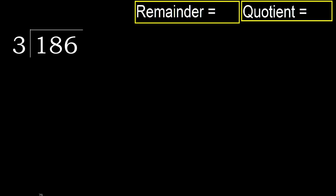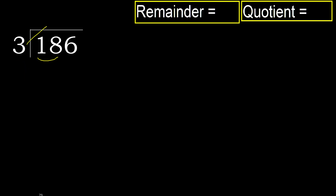186 divided by 3. 1 is less, therefore next. 18 is not less, therefore work with 18. 3 multiplied by which number is nearest to 18, but not greater? 3 multiplied by 7,